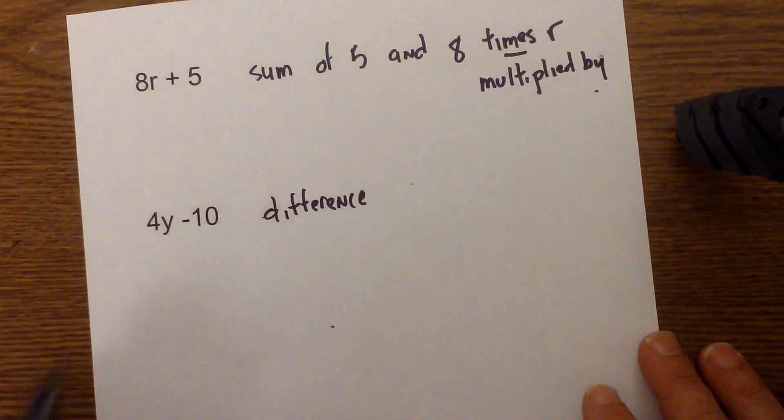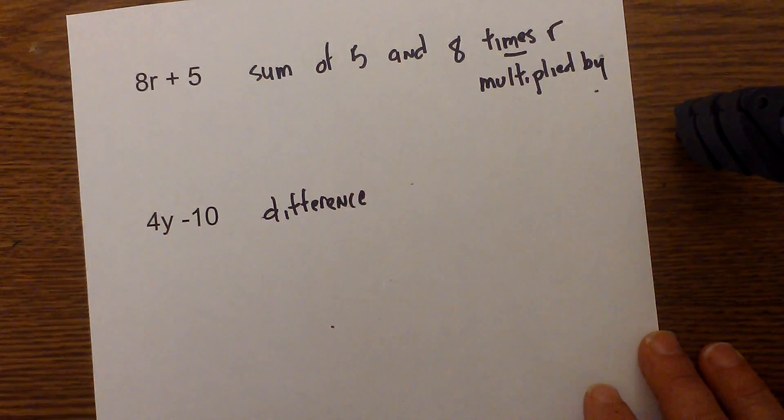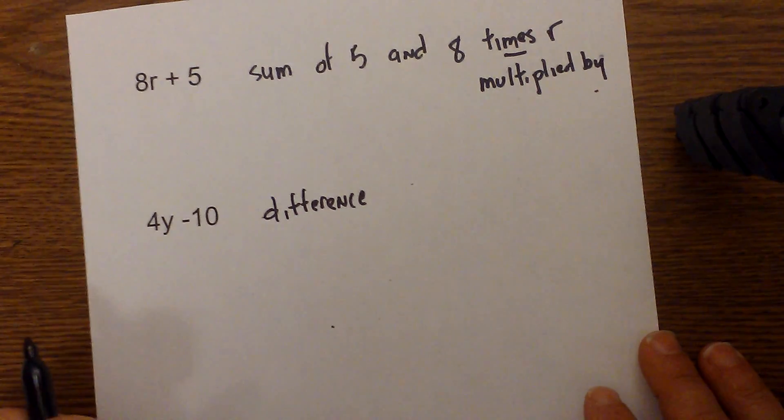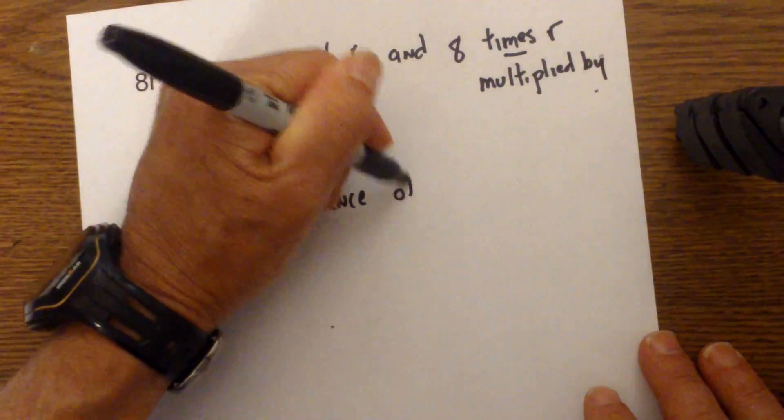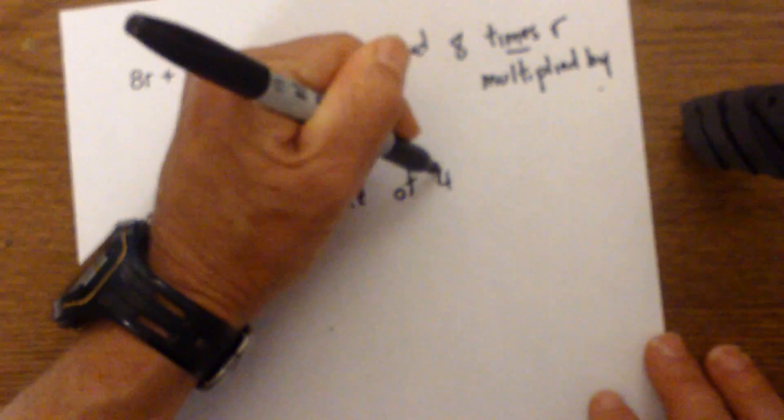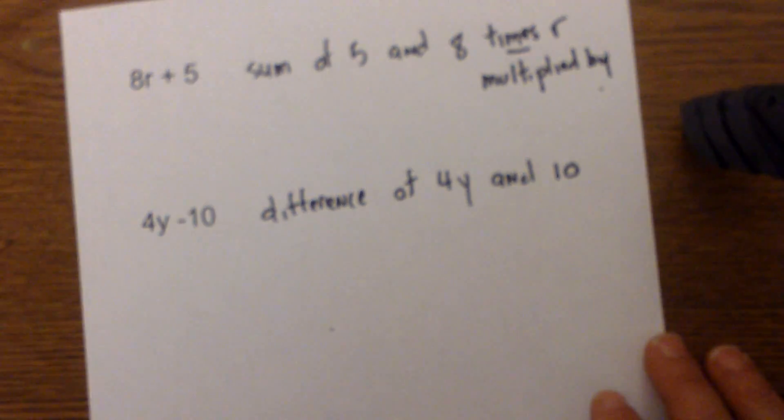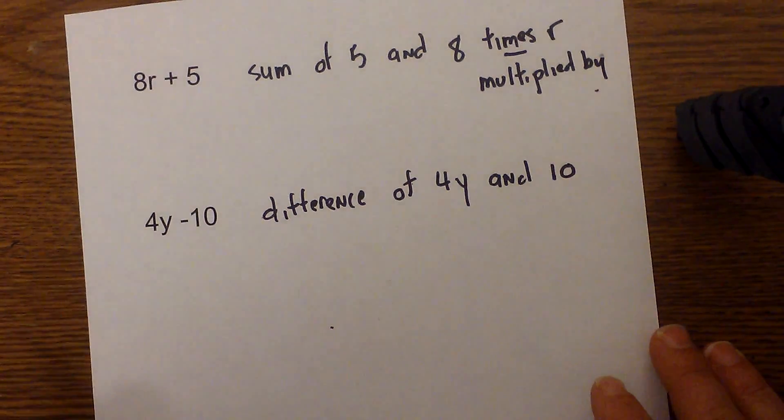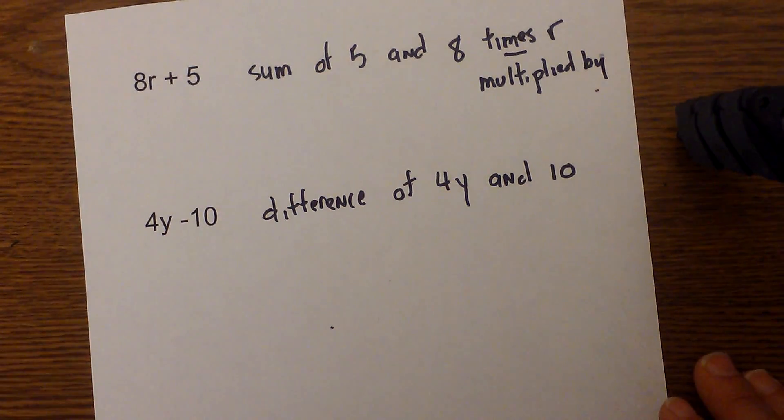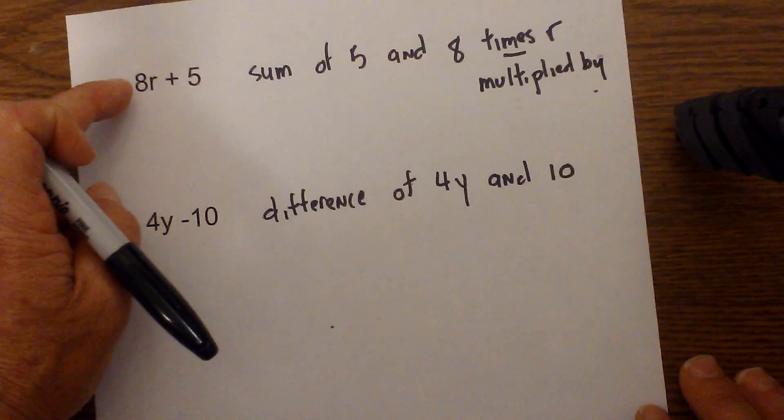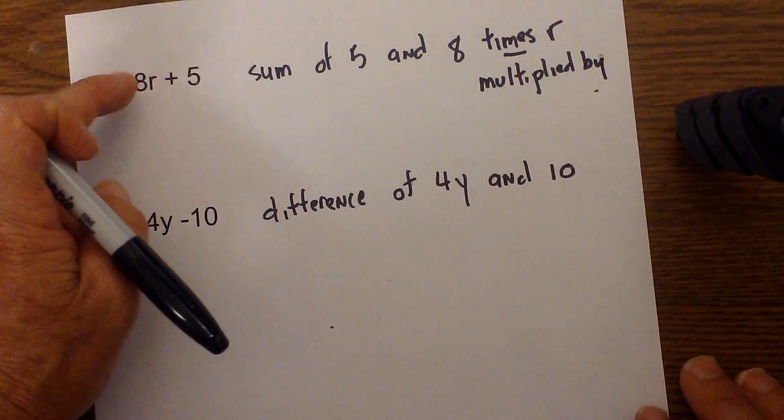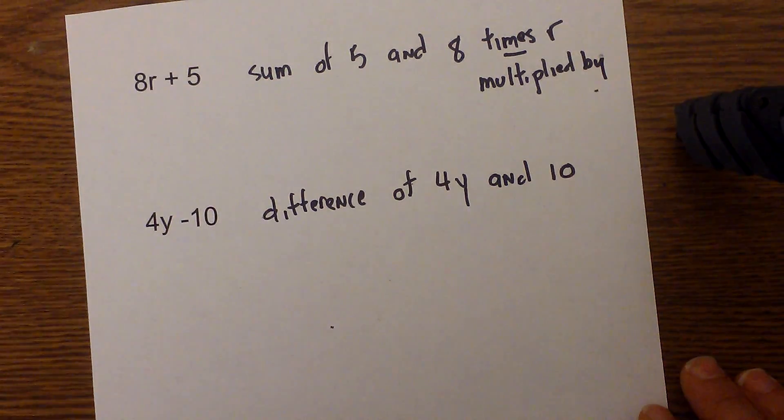Again on my chart I could use difference, I could use fewer than, but it's the difference of four y and ten. That's how I can write that. Anyway, hope that helps in setting up writing. This is kind of opposite—we're taking the algebraic expression and now we're translating it into words.